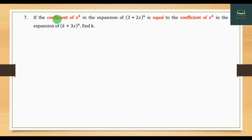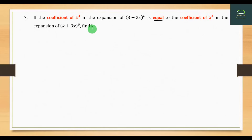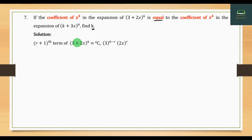Question number 7. If the coefficient of x^4 in the expansion of (3 + 2)^6 — the coefficient of x^4 in the expansion of (3 + 2)^6 is equal to the coefficient of x^4. The x^5 term is equal to the coefficient of 2^5 in the expansion of 2 into 2^5, equal to the coefficient of 2^5 by 3.